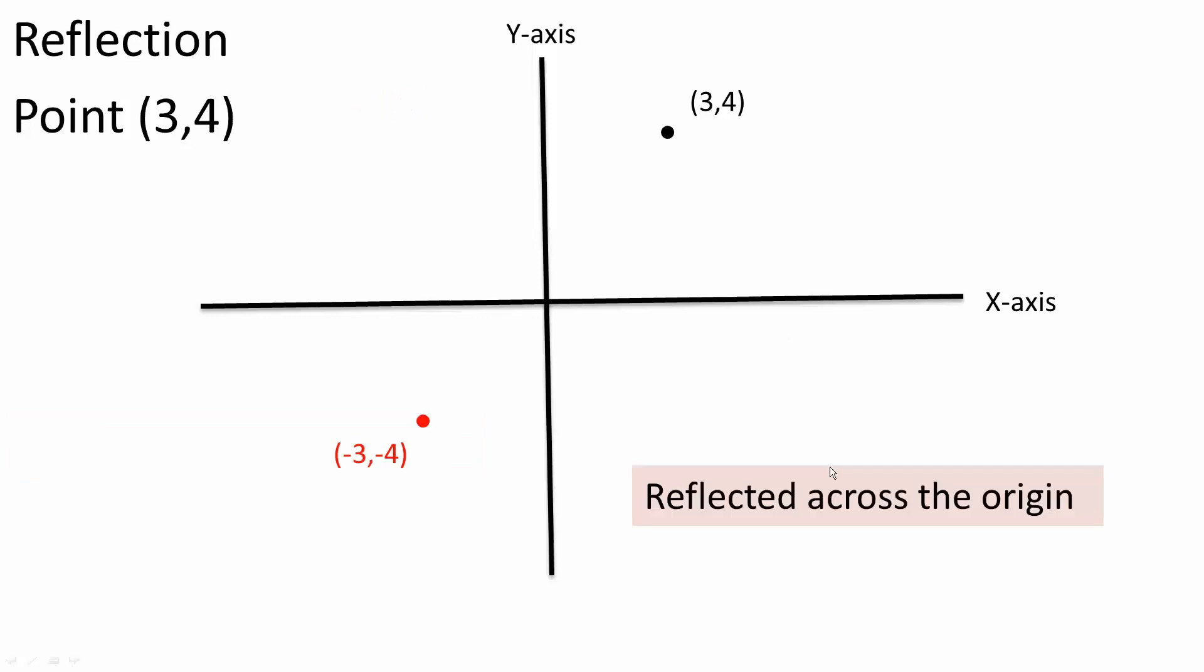Finally, reflect across the origin. The origin is here, so you want to reflect across the origin, so both pieces will be the opposite. (3,4) will now become (-3,-4).